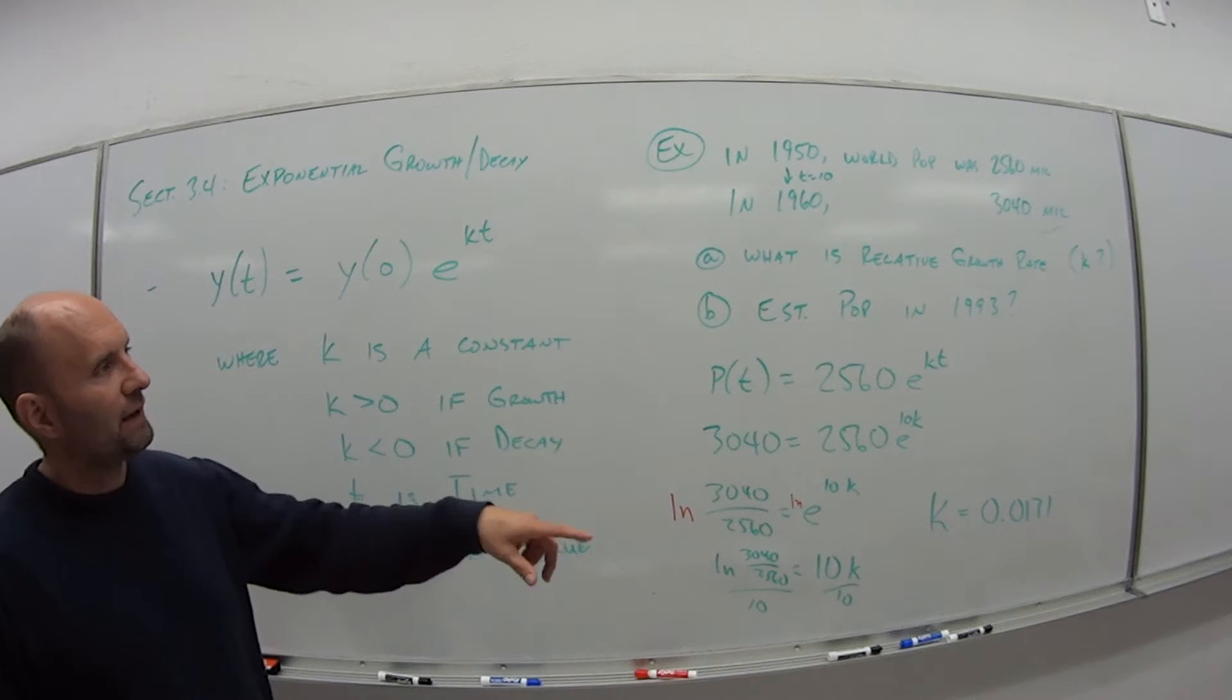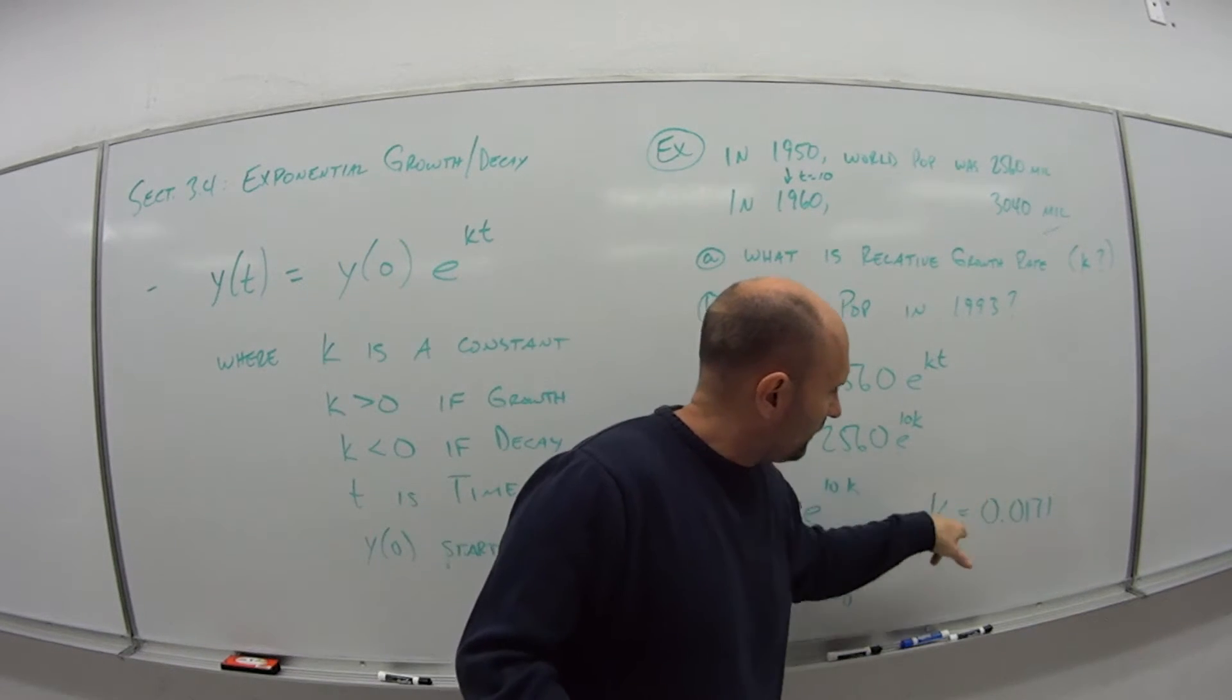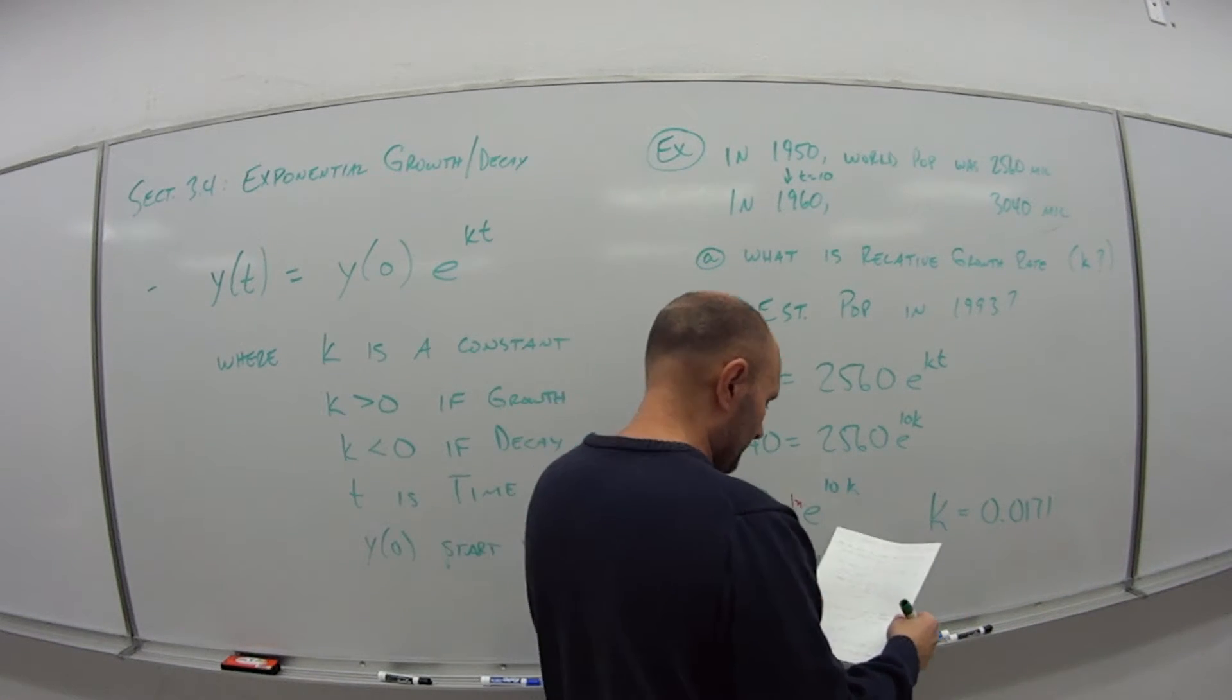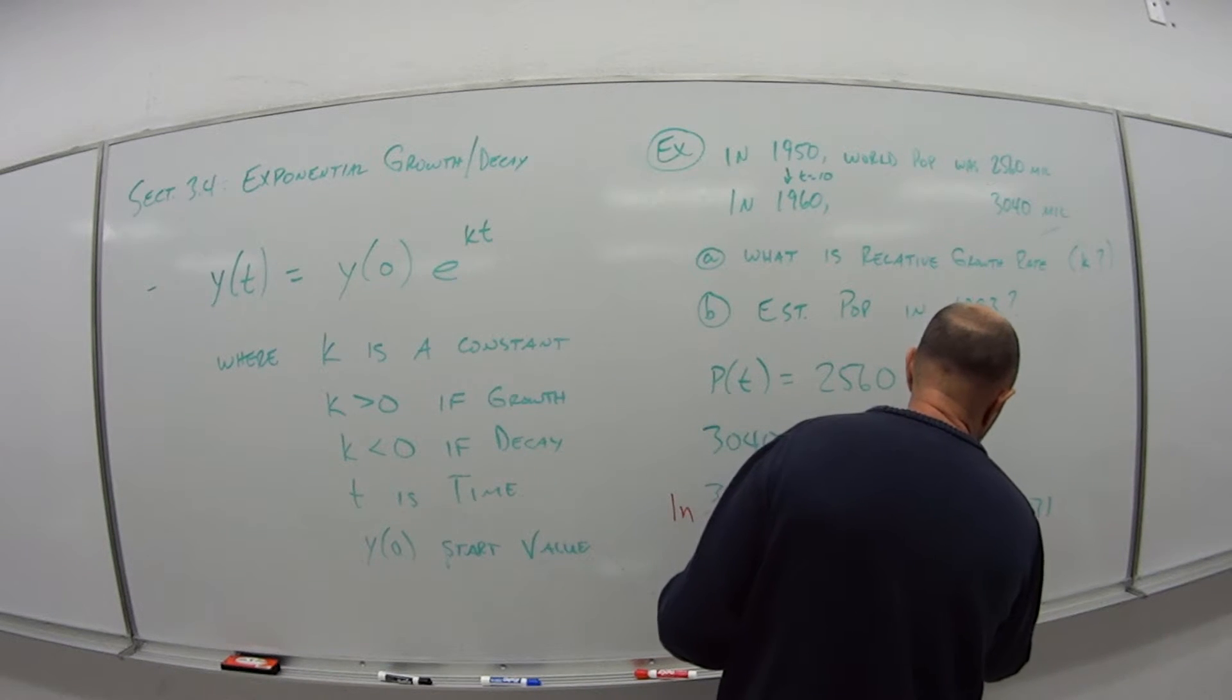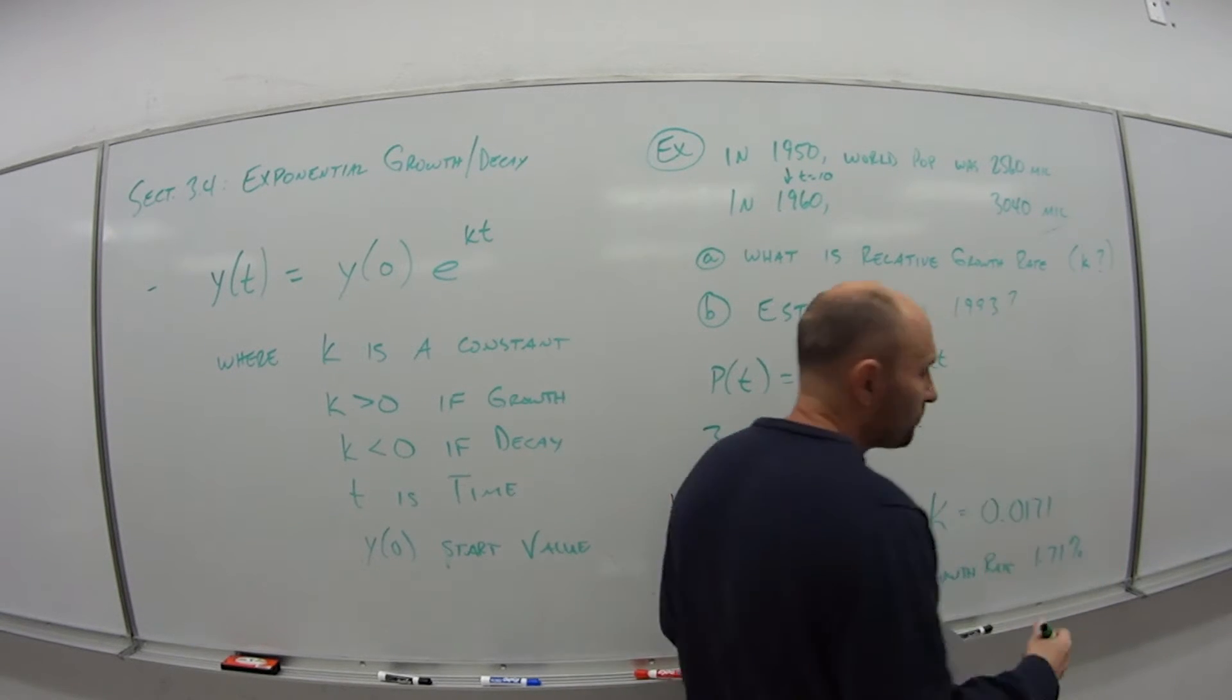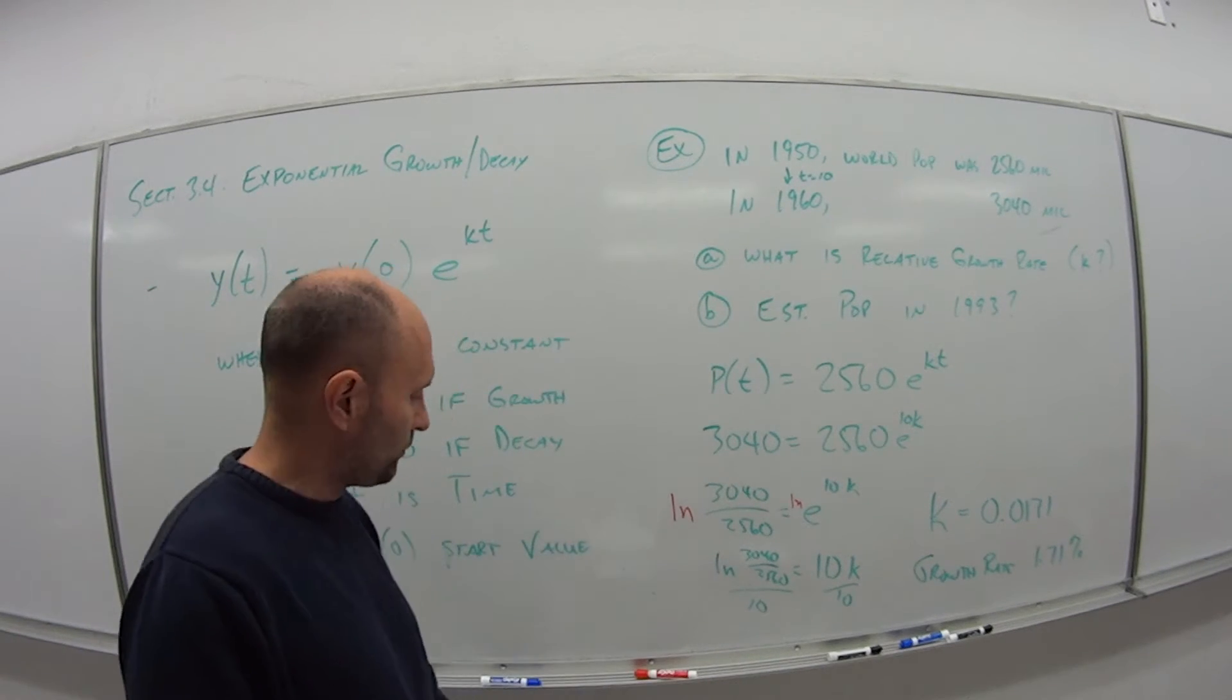It tells me that k is basically 0.0171. So that's my value for k. My relative growth rate, well, that would be a percentage. So I need to multiply this by 100, move the decimal places two places. So the growth rate is 1.71% per year. So it's saying that every year the population grows by 1.7%.